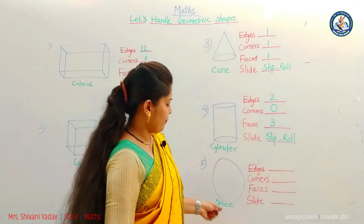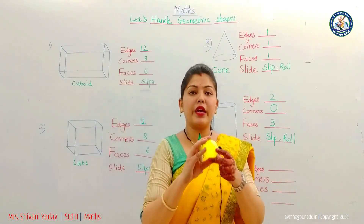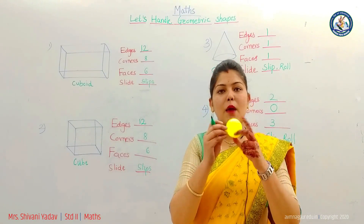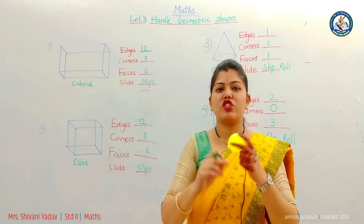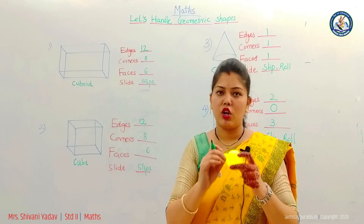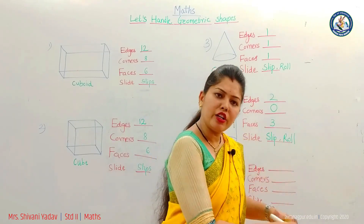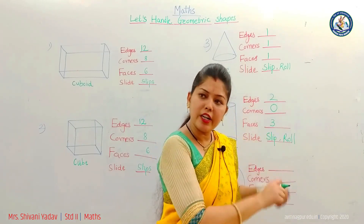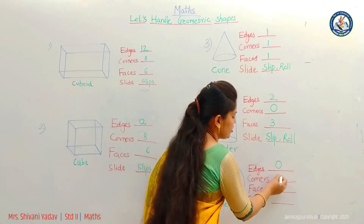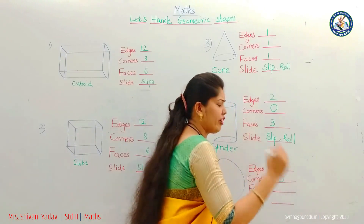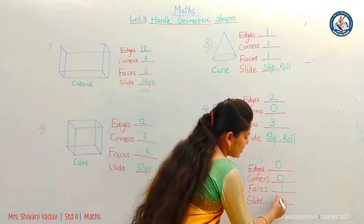Now the last shape: sphere. This ball is an example of a sphere shape. It doesn't have any edge or any corner — it just has a curved surface. When we put this on any slide, it rolls down. So edges: zero. Corners: zero. Faces: one — that is a curved circular face. And on a slide, it rolls.